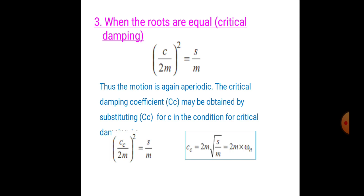Under critical damping the motion is aperiodic. The critical damping coefficient cc may be obtained by substituting cc for c in the critical condition: cc equals 2m times the square root of s/m, which equals 2m times ωₙ, where ωₙ equals √(k/m).